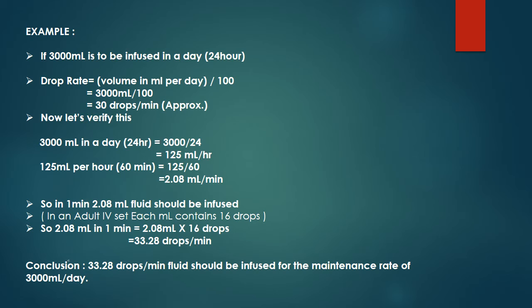Verification: 3000 mL in 24 hours = 3000 ÷ 24 = 125 mL/hr. Then 125 mL/hr ÷ 60 = 2.08 mL/min. In an adult intravenous set, 2.08 mL/min × 16 drops/mL = 33.28 drops per minute. Conclusion: 33.28 drops per minute fluid should be infused for a maintenance rate of 3000 milliliters in a day (24 hours).